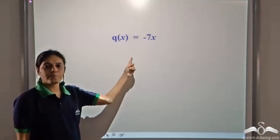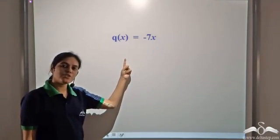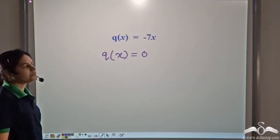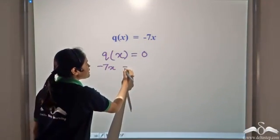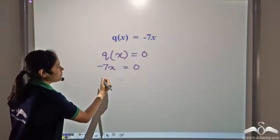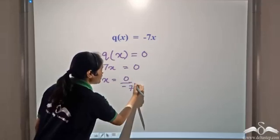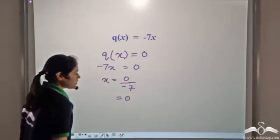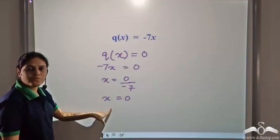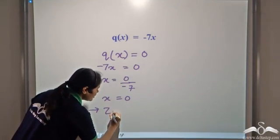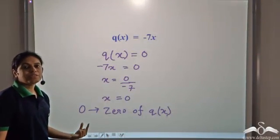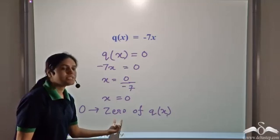Now what is the zero of Q(x) = -7x? To find the zero, we solve Q(x) = 0, which gives -7x = 0. Dividing both sides by -7, we get x = 0. So 0 is the zero of Q(x). For this polynomial, the constant number zero is the zero of Q(x).